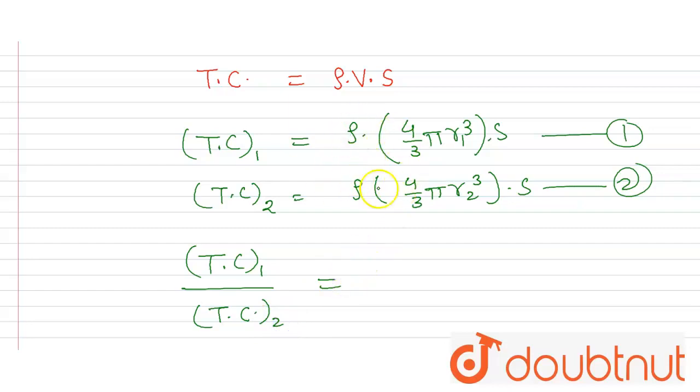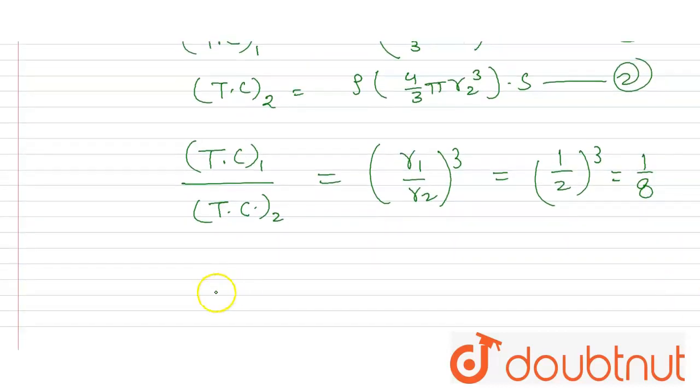will be equal to, ρ to ρ will cancel out and here this one will cancel out, s to s will cancel out, and it will come out r₁ divided by r₂ to the power 3. So it will come out 1 by 2 to the power 3, and it will come out 1 by 8.